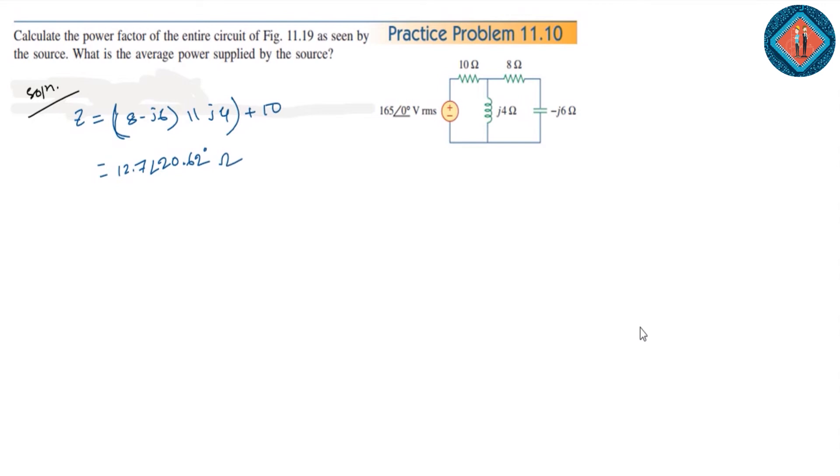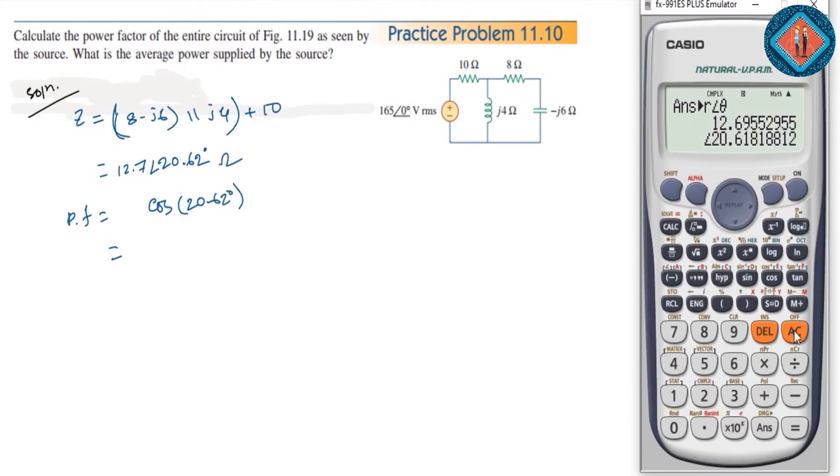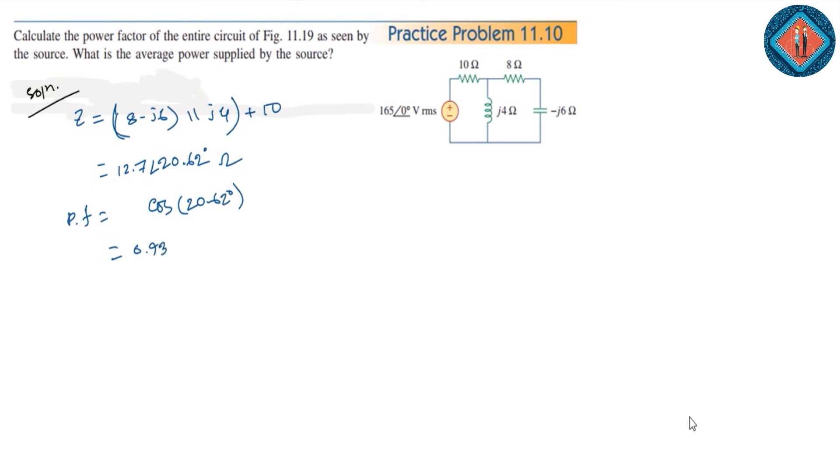The power factor is cosine of minus 20.62 degrees, which equals 0.936. For the current, I_rms equals V_rms divided by Z. That's 50 at angle 0 degrees divided by 12.7 at angle 22.62 degrees.